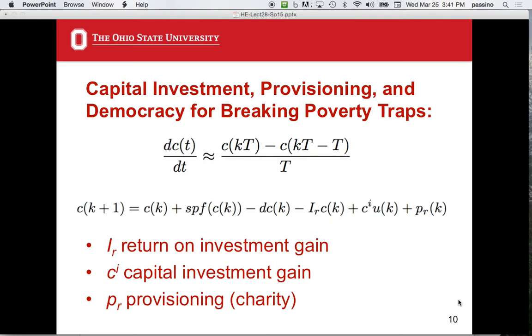Next one is going to be IR times C. This is the return on investment gain. And then I'll have CIU of K, which is the capital investment gain. And then I'm going to have PR, which is provisioning. And this PR is simply going to be a pulse of X dollars on some time in your life. And we want to see if that will jump you up, increase your capital to the point that you jump out of the poverty trap and take off on your own.